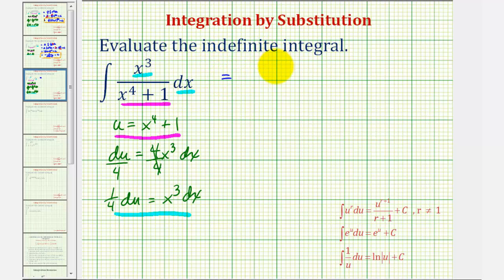This would be equal to the integral where x to the third dx is equal to one fourth differential u. Our numerator would now just be one and the denominator is now just u.